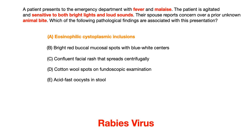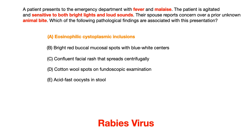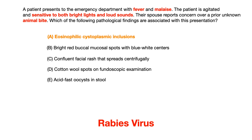The correct answer is choice A — eosinophilic cytoplasmic inclusions. This question is hinting at the rabies virus. The important information to pull out is: fever and malaise, photophobia and phonophobia, and the diagnosis is sealed when the test writer tells you there was an unknown animal bite, indicating the presentation is due to a pathogen from that bite. Choice A is correct because eosinophilic cytoplasmic inclusions are also known as Negri bodies.